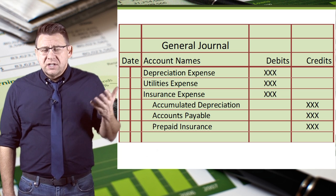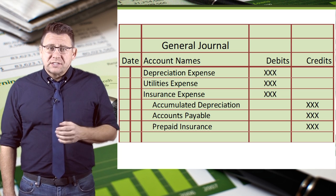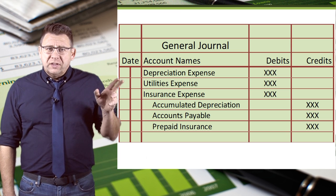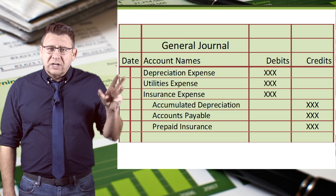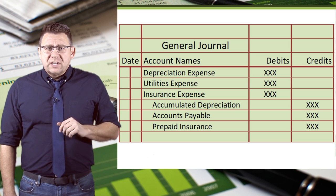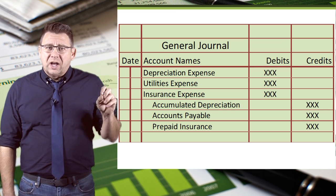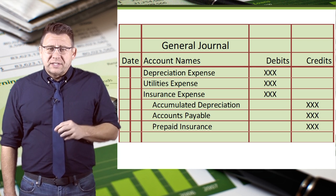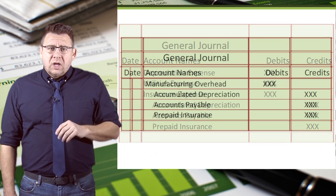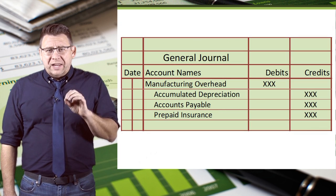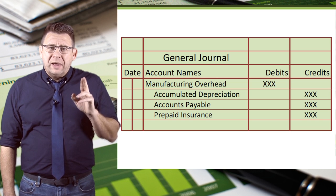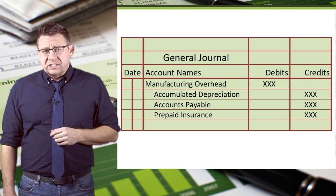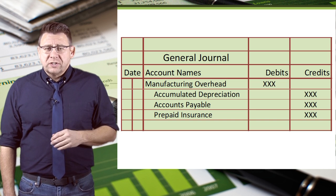Operating expenses are period costs. But let's assume this company is a manufacturer and all of these costs come from the production activity of the value chain. These costs are product costs and need to be moved to balance sheet inventory accounts rather than expense accounts. So we actually record manufacturing overhead costs to the manufacturing overhead account rather than the various expense accounts used by service or merchandising firms.